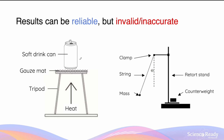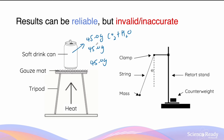Results can be reliable but invalid and inaccurate at the same time. In the soft drink can example, we can achieve consistent mass losses of 45 grams every single time — consistently reliable and reproducible. But what if the 45 grams is due to the loss of both carbon dioxide and water? This mass loss does not truly reflect the loss of carbon dioxide alone — it overestimates it. Therefore the method is invalid, and the results are also invalid and inaccurate, even though they are reliable.